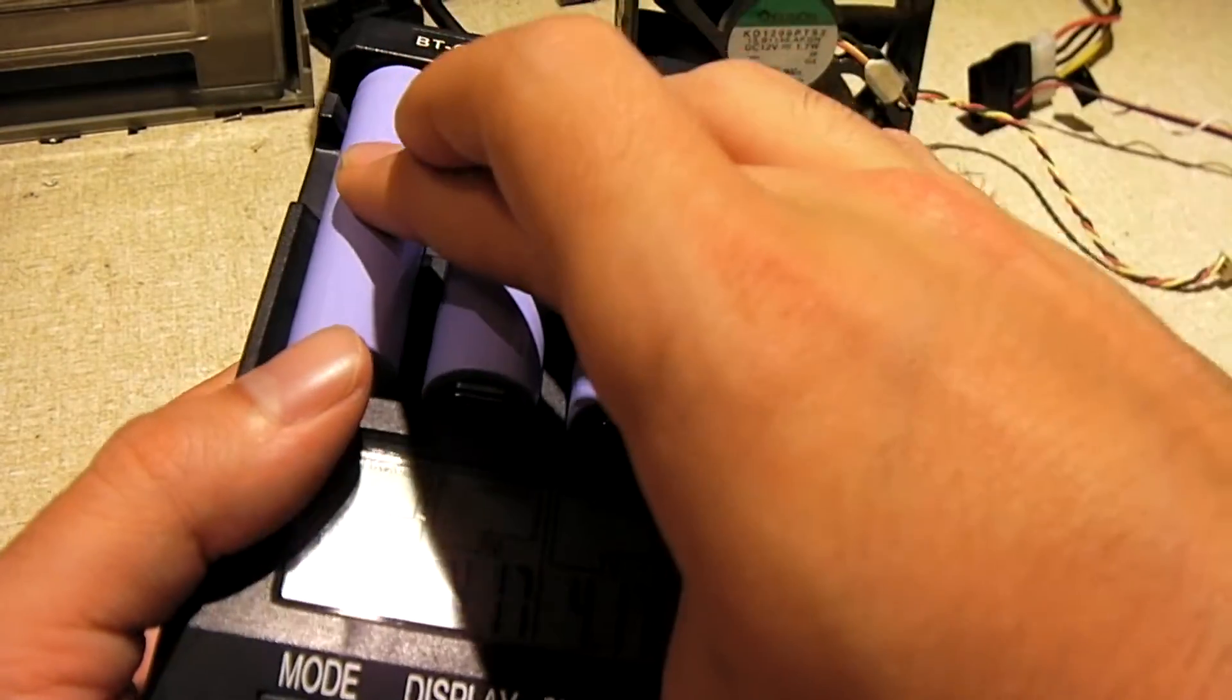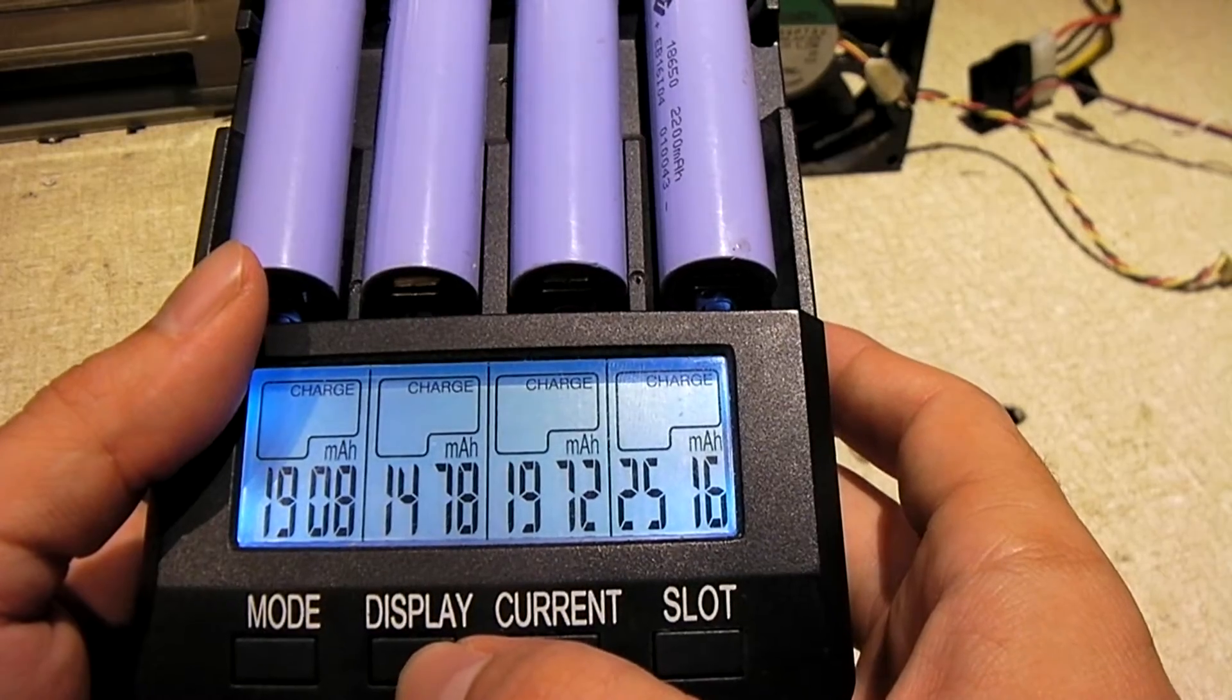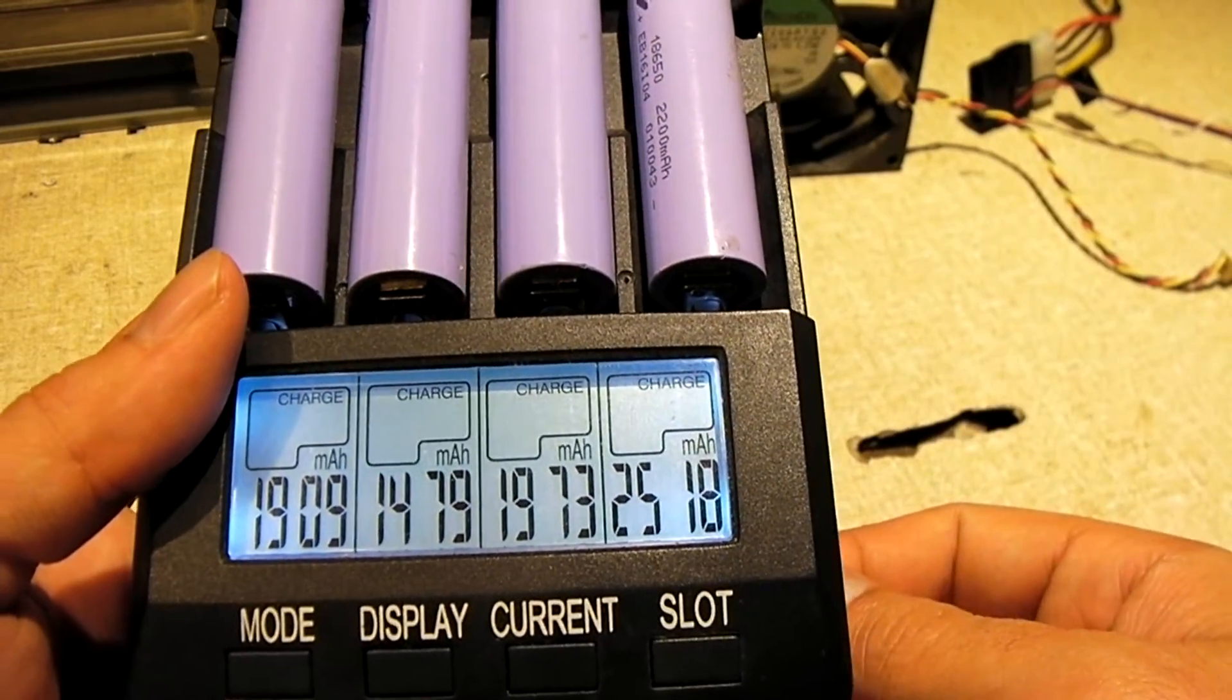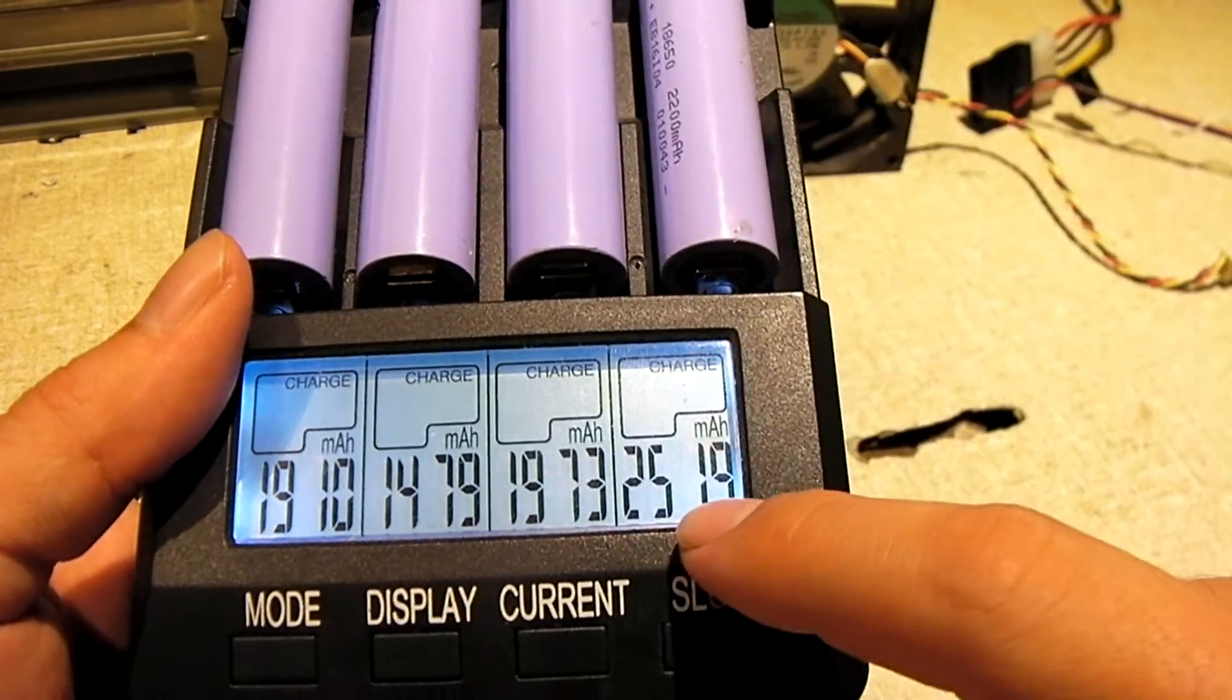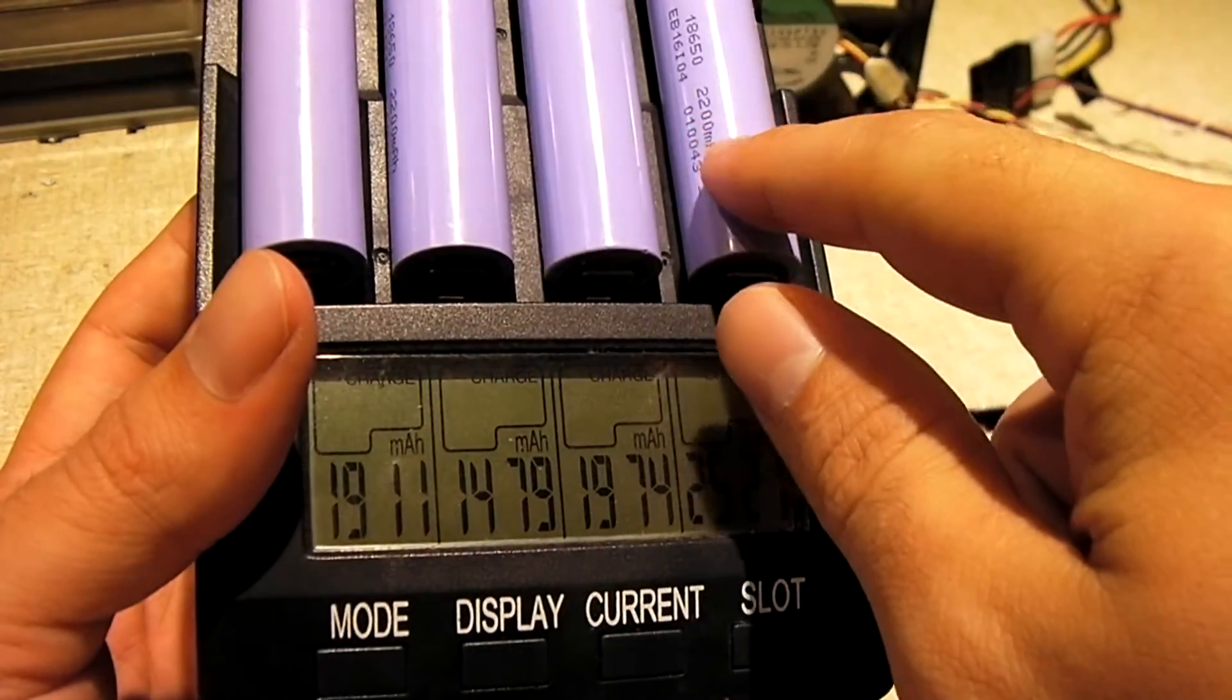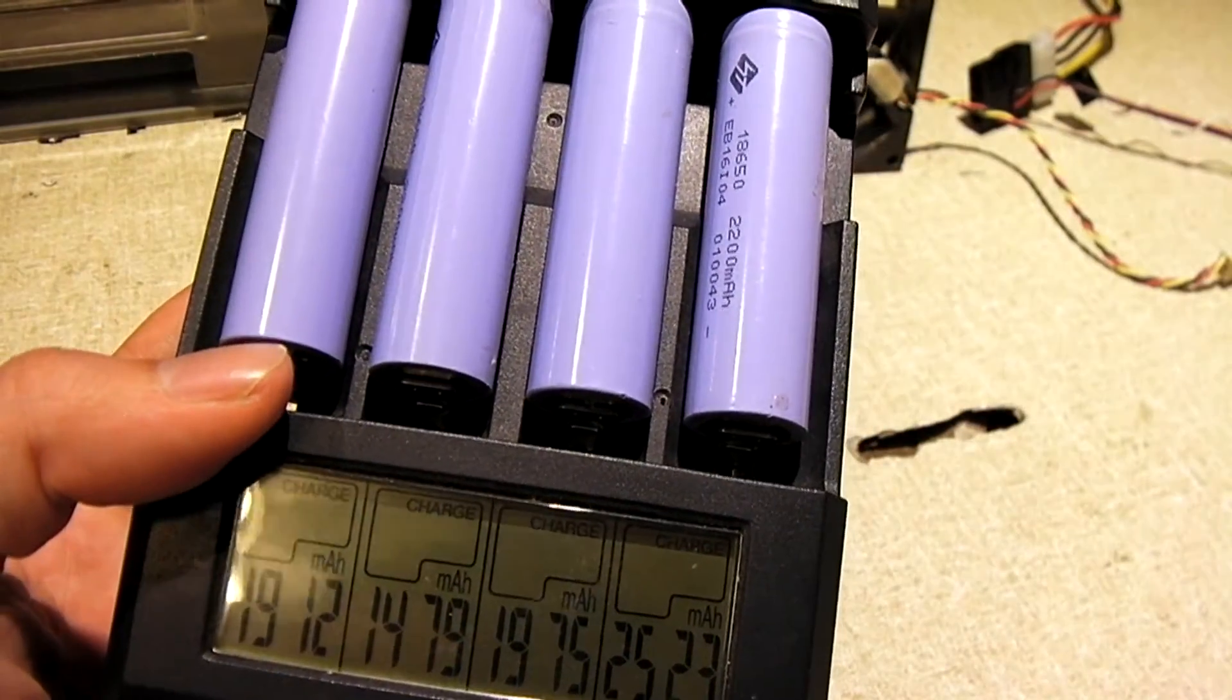I forgot to mention, when I pulled these cells out of the laptop battery, I've kept them in groups. So these two were together in a group. These two were together in a group. And these two were together in a group. To see the amount of power that's been put into these is varying so much, it's just unreal. You can see this one here is taking 2500 milliamp hours, which is way more than the capacity that's stamped on the cell. Meaning that a lot of the power that this charger has actually put in has been wasted as heat.